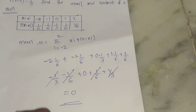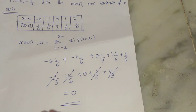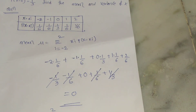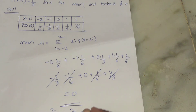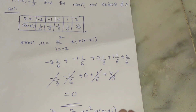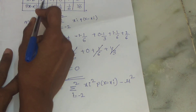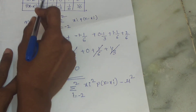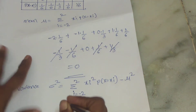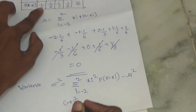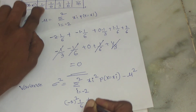Now for the variance. The variance formula is: σ² = Σ (from i = -2 to 2) of x_i² × P(X = x_i) − μ². We square each x_i, multiply by the corresponding probability, then subtract μ². Starting: (-2)² × (1/6) + (-1)² × (1/6) + ...